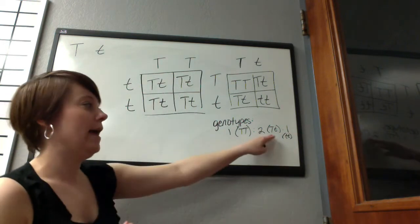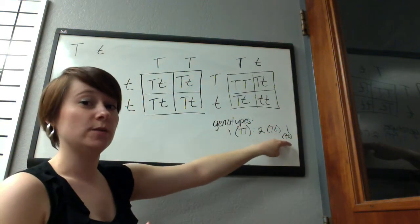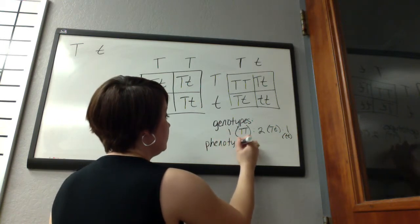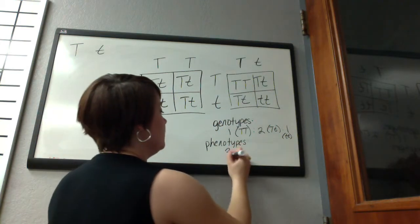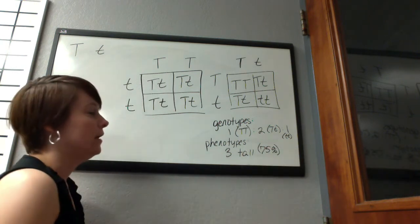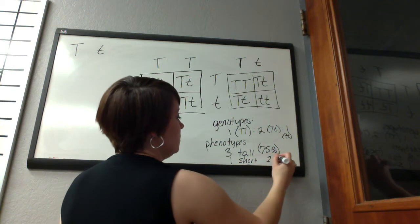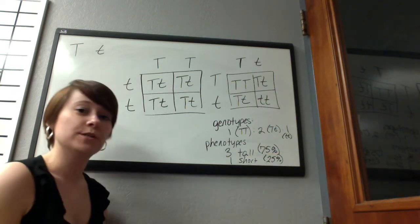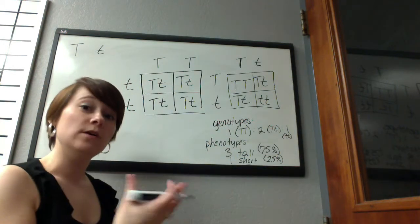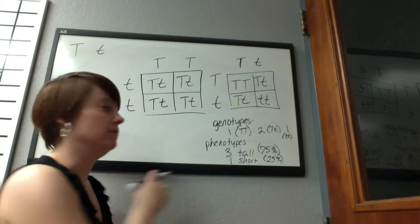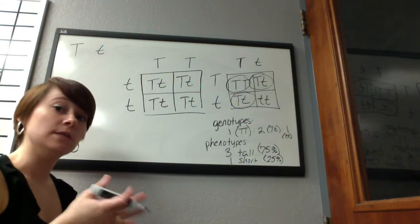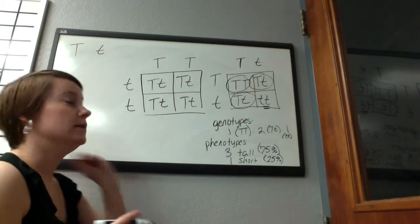So the genotypes are: 50% heterozygous, 25% homozygous recessive, and 25% homozygous dominant. If we're talking about phenotypes, three of them are going to be tall — so 75% would be tall — and one is going to be short, so 25% would be short. The phenotypes don't always match the genotypes because the heterozygous individual looks just like the dominant individual.